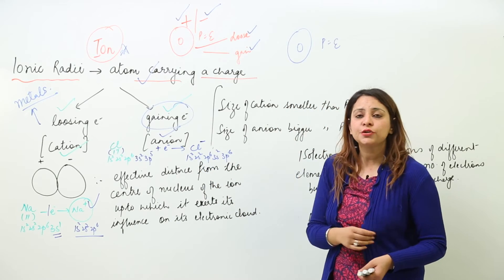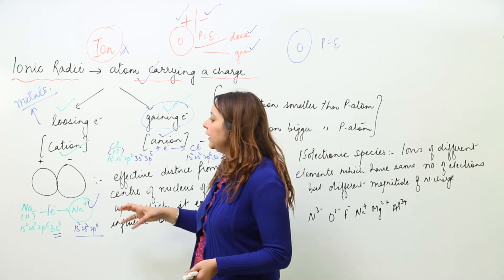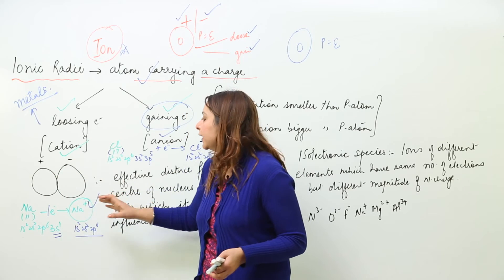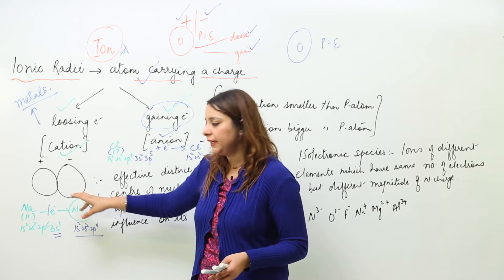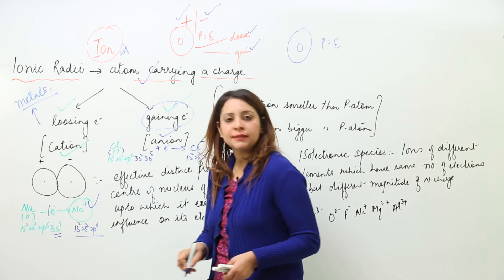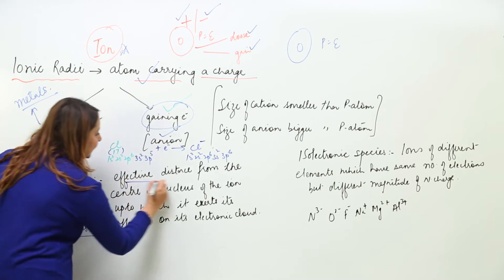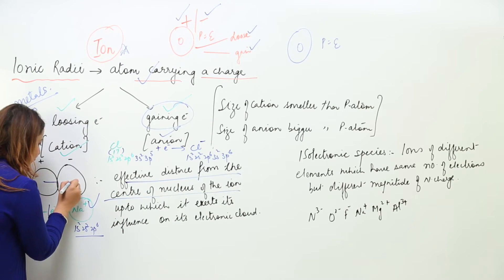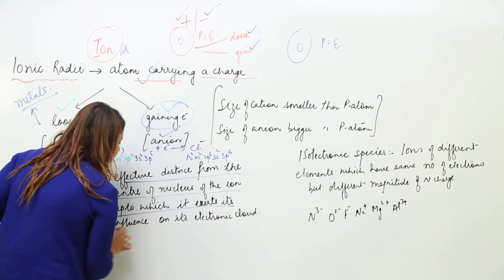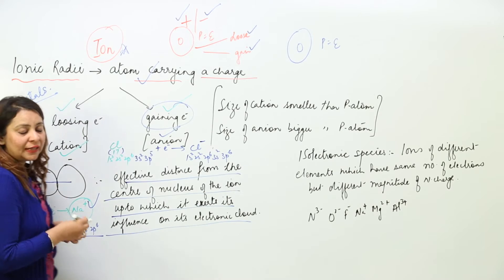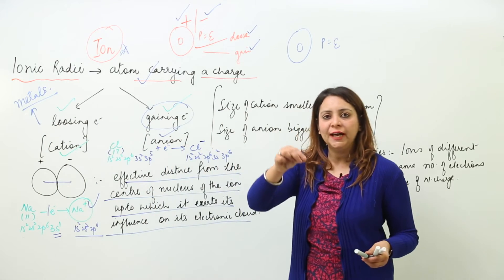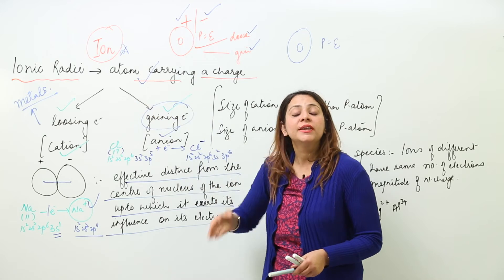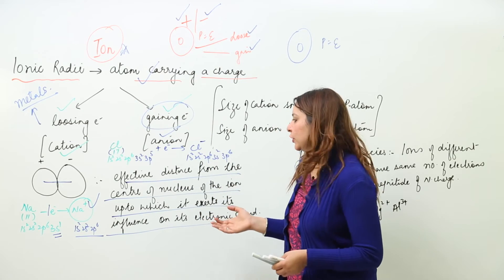Now taking into consideration ionic radii: it is assumed that whenever a positive and negative ion approach each other, they touch each other due to attraction. The ionic radius is the effective distance from the center of the nucleus of the ion up to which it exerts its influence on the electron cloud — the distance from the center of the nucleus to the region where its effect can be felt.